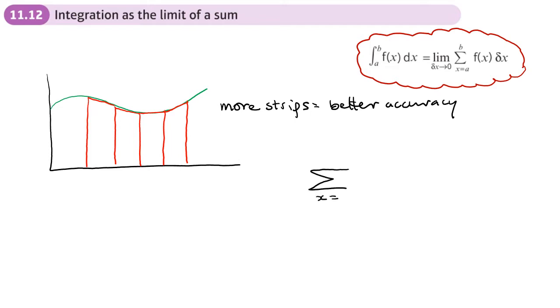So X equals A, X equals B. So this is our limits. This would be the lower limit, A, and this would be our upper limit here, B.